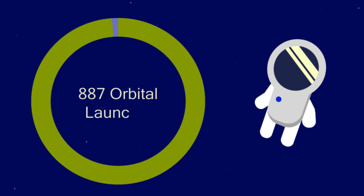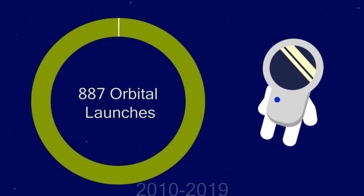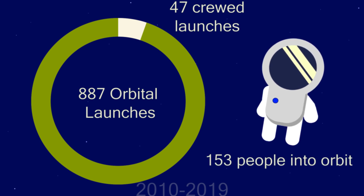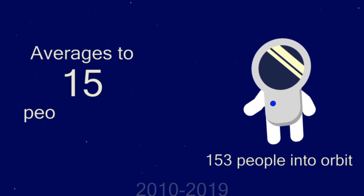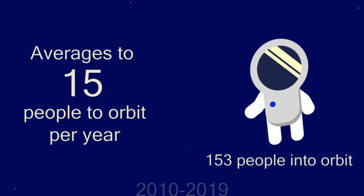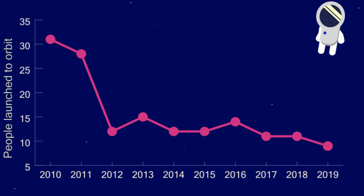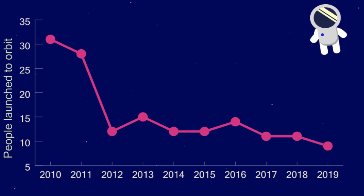Out of the 887 orbital rocket launches from 2010 to 2019, 47 of them were crewed, taking 153 people into orbit. One of these missions did experience a launch failure, but the crew was able to safely escape. This averages to roughly 15 people launching to orbit per year. Looking at the graph, there's a clear drop-off between 2011 and 2012 — because 2011 was the last year of the space shuttle. In fact, over a third of all the people who launched to space over the past decade did so in 2010 or 2011. With the introduction of Crew Dragon and Starliner, we should see an uptick in astronauts going to orbit.